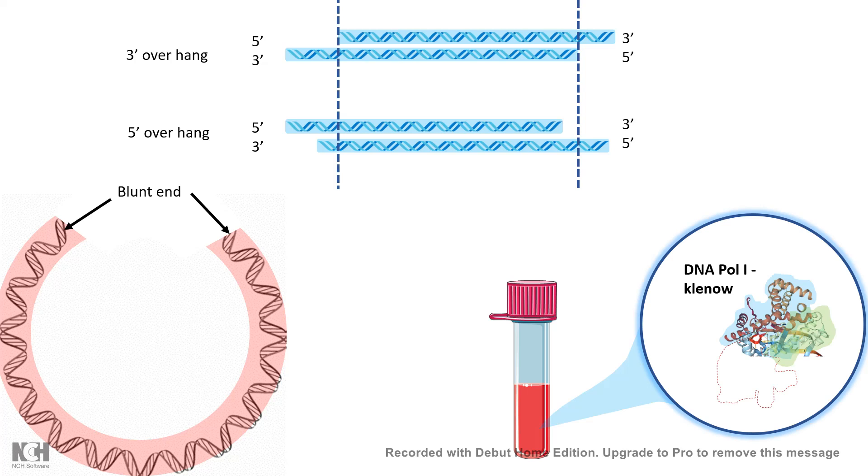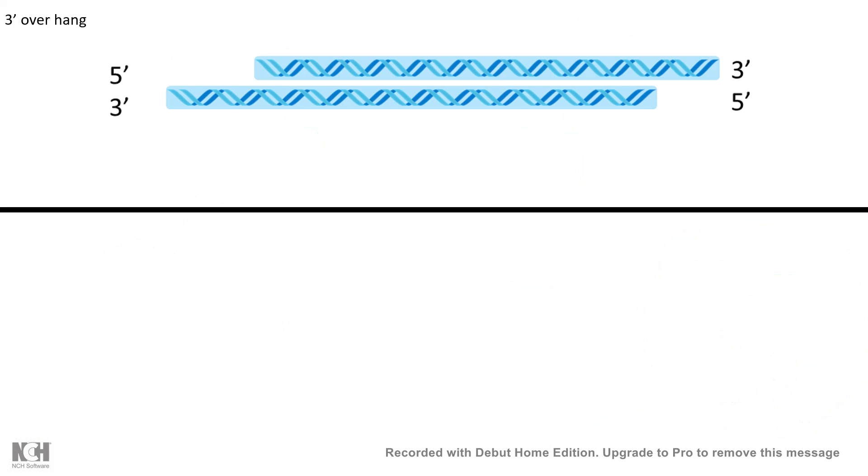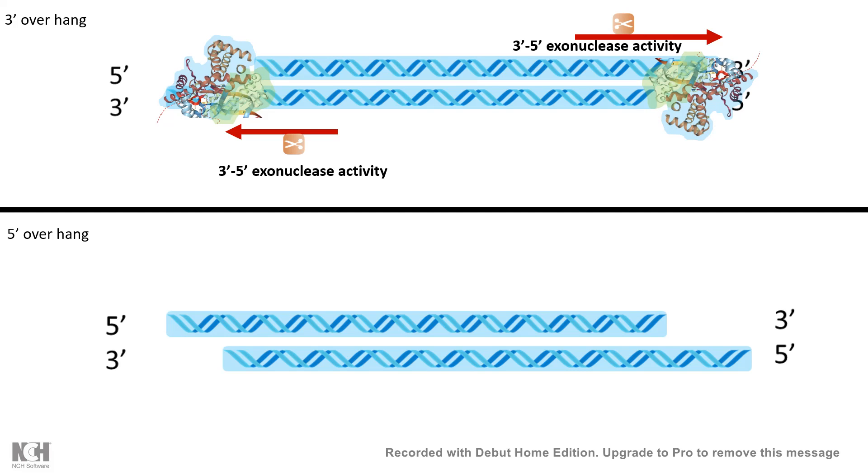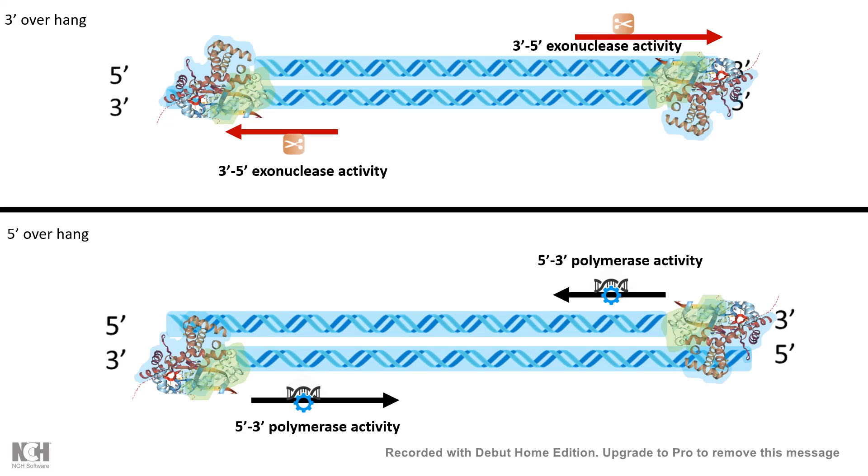And in that regard, Klenow fragment comes very handy. So what would happen is the Klenow fragment would sit in the 3' or 5' blunt ends, and it has a 3' to 5' exonuclease activity, so it would chop off the 3' overhangs. And in case of 5' overhang, it would sit there, and it has the 5' to 3' polymerase activity which would fill the gaps.